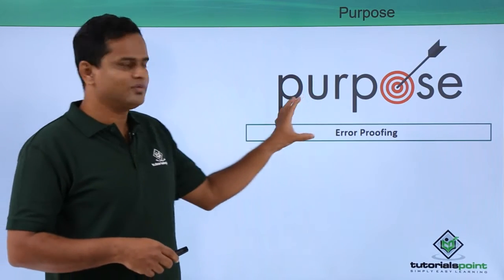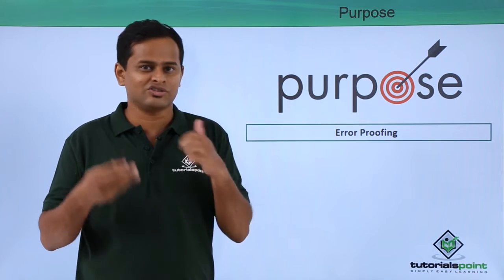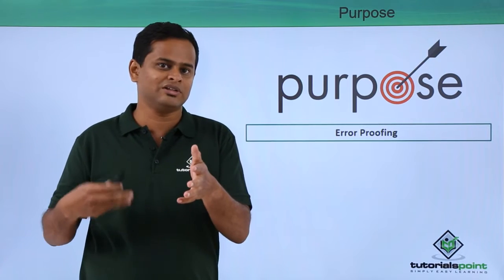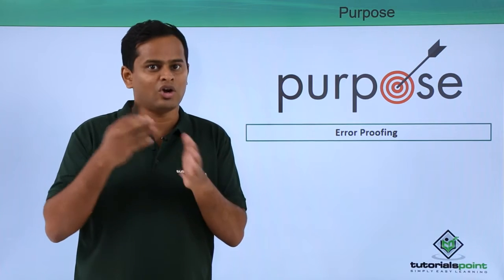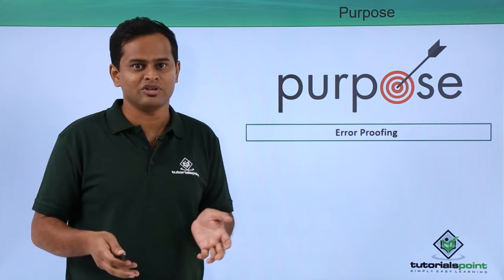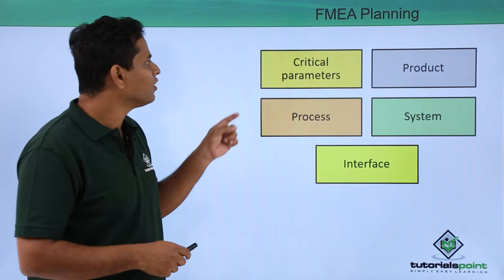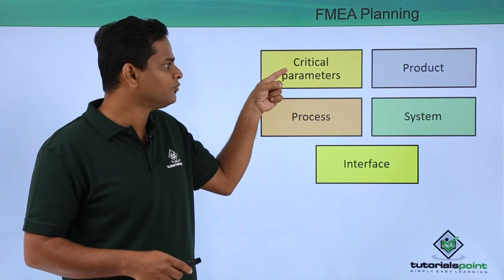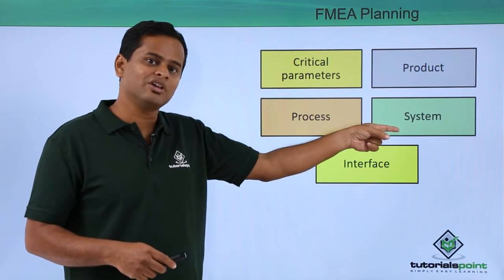First we need to understand the purpose — why we need FMEA. We need to have risk-based thinking, and based on that we need to have all the feasibilities or mechanisms under our system, product, or process for the right error-proofings. That means we should not have any defects. This can be for critical parameters classification, for product FMEA, process FMEA, system FMEA.